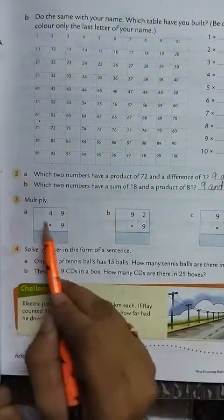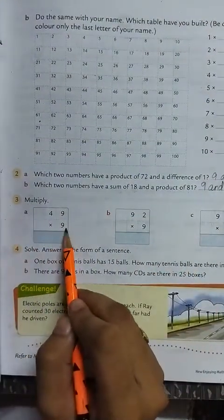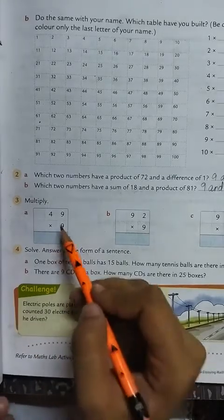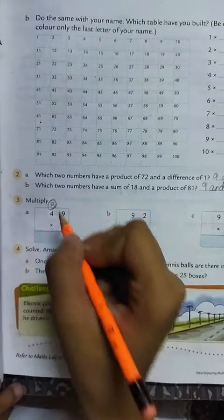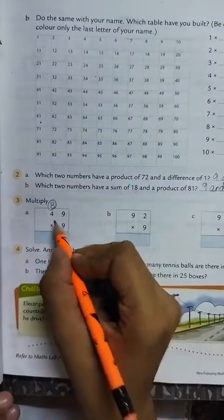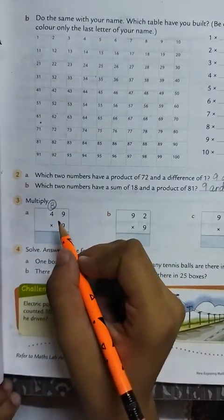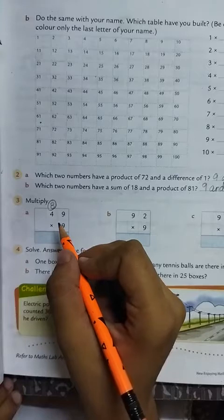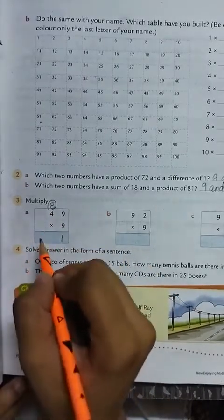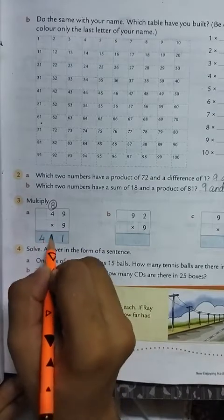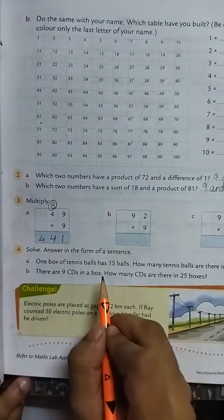Question 3, multiply 49 multiplied by 9. First, we will multiply 9 with 9. 9 nines are 81. Now 9 fours are 36. 36 plus 8, 44. The answer is 441.